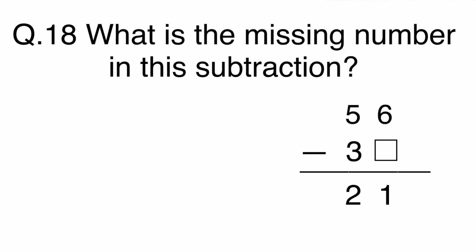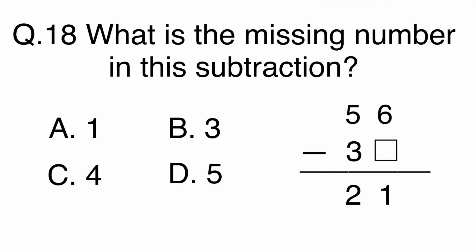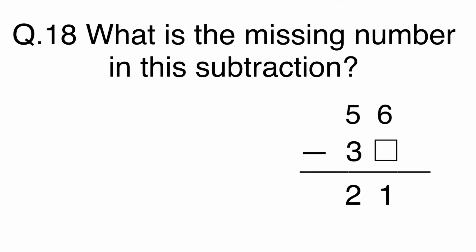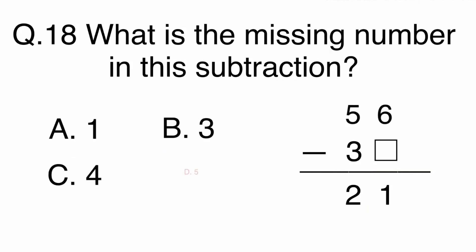Question 18. What is the missing number in this subtraction? Let's focus on the ones column for this question. You can subtract 1 from 6 to get the missing number. The answer is D, 5.